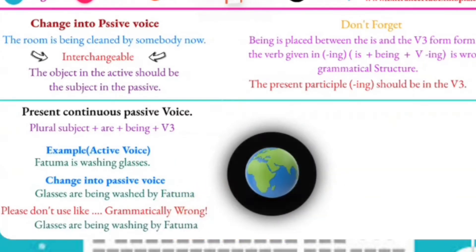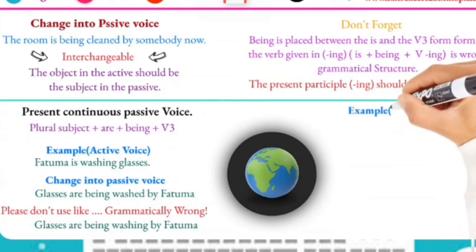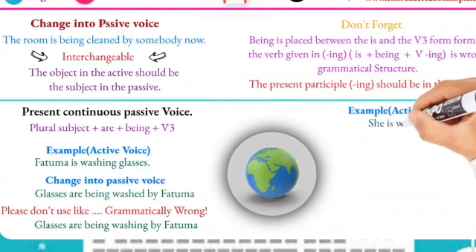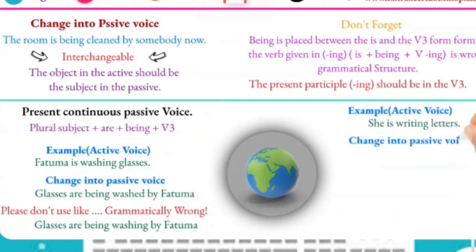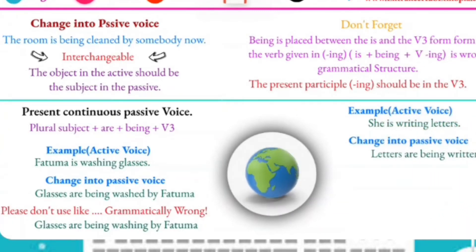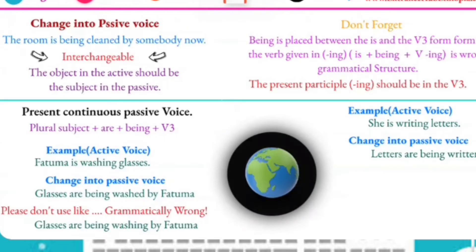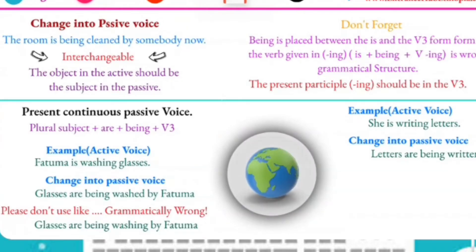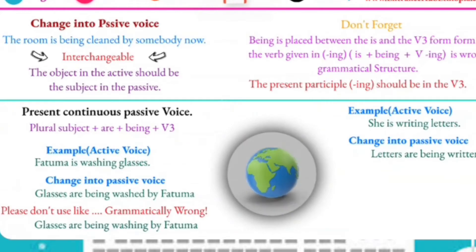Another example: 'She is writing letters' — active form. The passive form is: 'Letters are being written by her.' The agent 'by her' is optional and can be omitted, giving us simply: 'Letters are being written.'